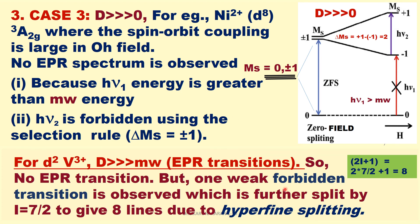For vanadium 3+ (d²), one weak forbidden EPR transition hν₂ is observed, which is further split by the vanadium nuclear spin I = 7/2, giving 2I+1 = 8 hyperfine lines. In summary, for d² vanadium 3+, one weak forbidden EPR transition is observed, which is further split by vanadium nuclear spin I = 7/2 to give 8 lines due to hyperfine splitting.